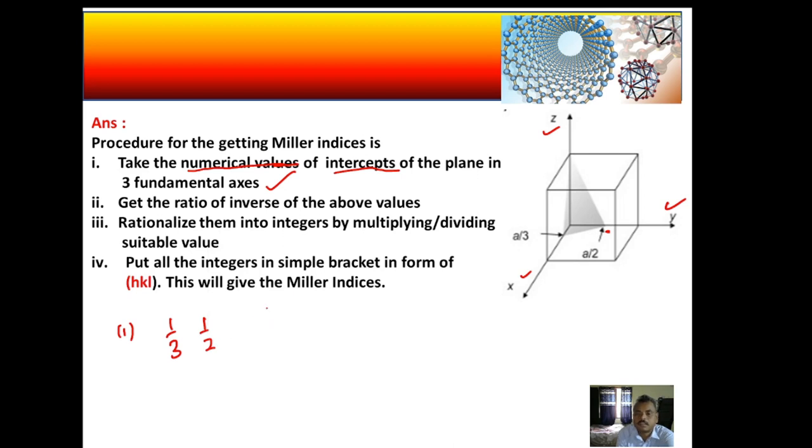And in the z direction it is at full vector fundamental vector, that means 1. Now you see I have not taken anything like a or b; I have taken only the numerical values of the intercepts.